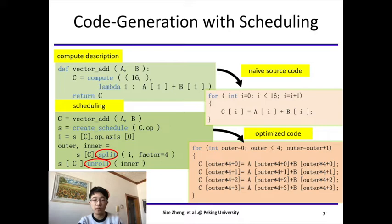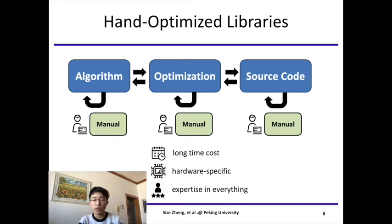In fact, the workflow of hand-optimized libraries is from algorithm to optimization to source code. All these stages require manual modification and tests, which may repeat hundreds of times. What's more, the stages are dependent on each other. Once one stage changes, the other stages have to change correspondingly. This requires the developers to have expertise in both algorithm and hardware. As a result, the whole development process may involve hundreds to thousands of engineers and take a very long time. The results are hardware-specific, not portable.